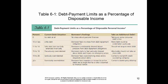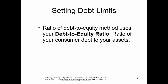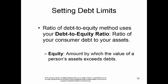When you start getting above that, you're beginning to be in financial trouble. We also have the ratio of debt to equity — the ratio of your consumer debt to your assets. Equity is the amount by which the value of your assets exceeds your debts. A ratio of 33% or higher is excessive when it comes to your debt-to-equity ratio.